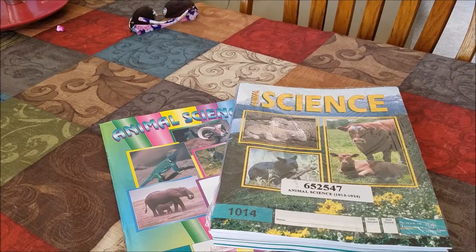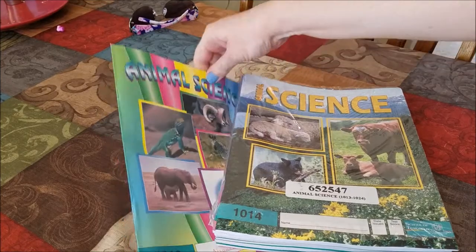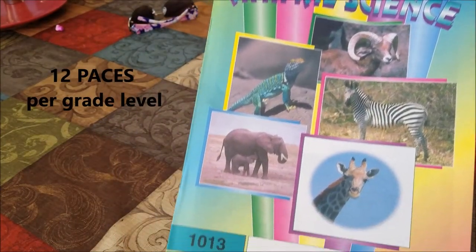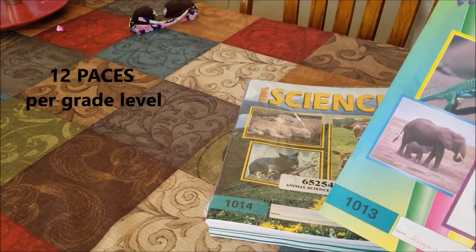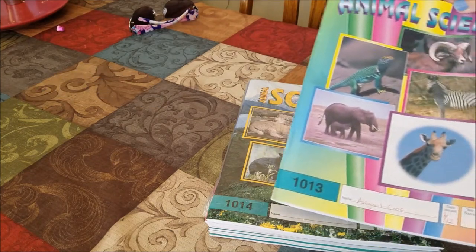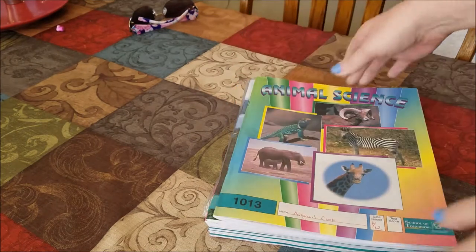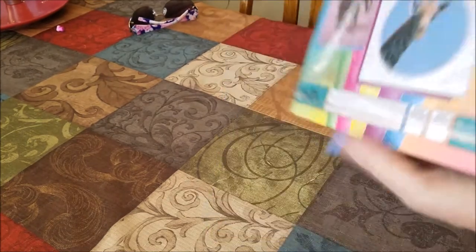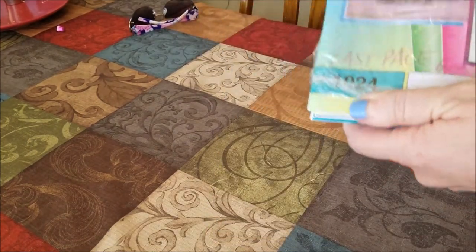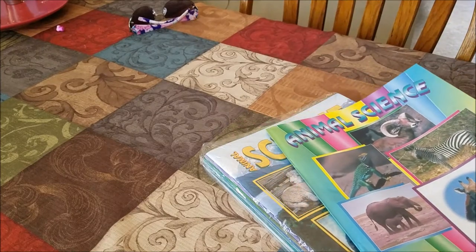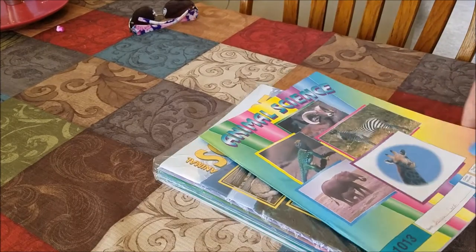Each subject for ACE comes in 12 paces. One of these is called a pace. There are 12 of them for each grade level. This grade level is for second grade. It starts at 1013 and goes all the way to 1024, and once you finish 12, it's considered one grade level.